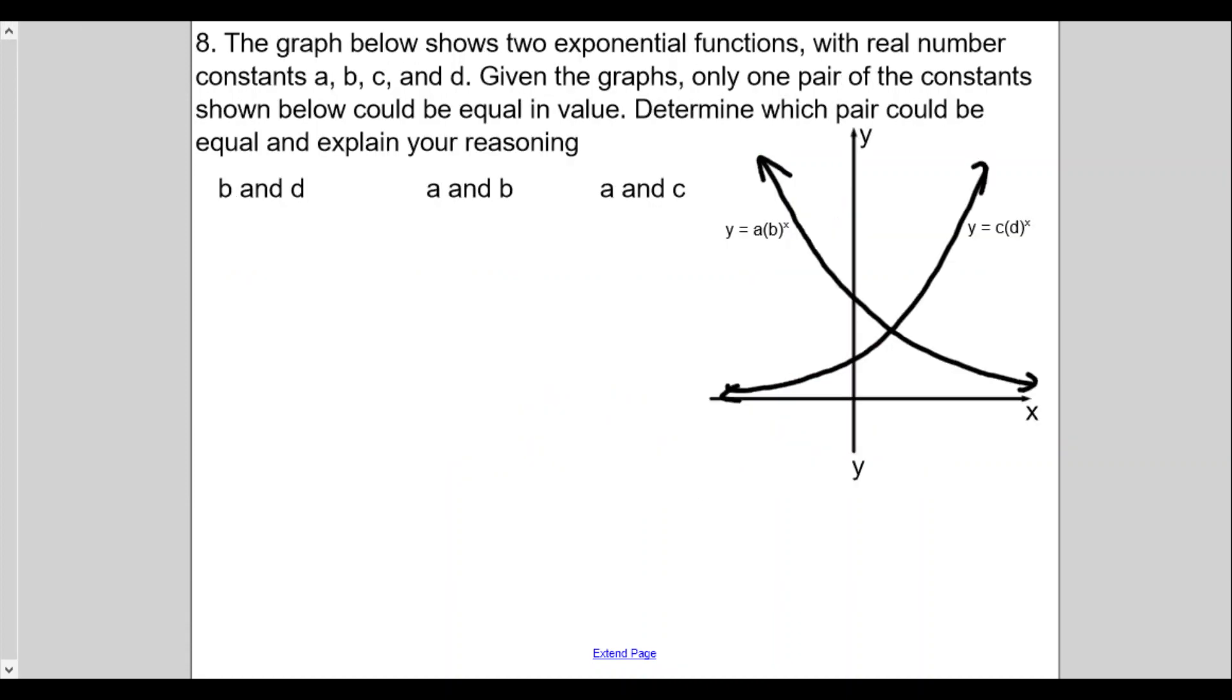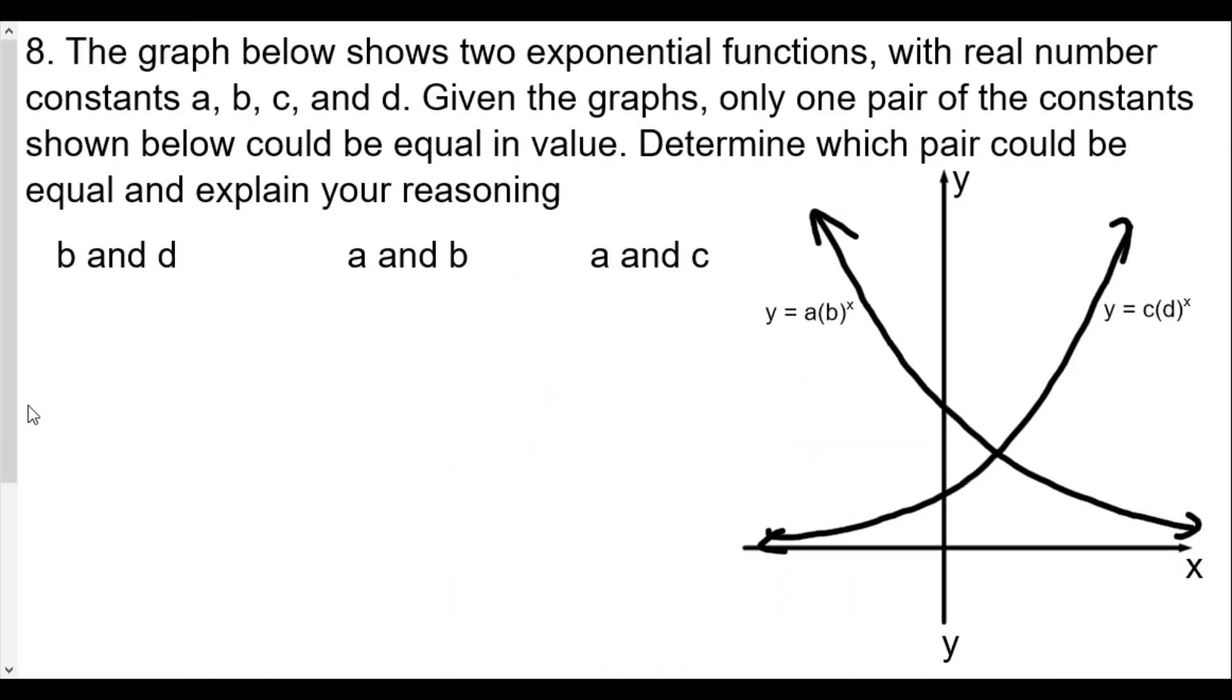Number 8: we have two functions, y = a times b to the x and y = c times d to the x. The graph below shows two exponential functions with real number constants a, b, c, and d. Given the graphs, only one pair of constants shown could be equal. Determine which pair could be equal.